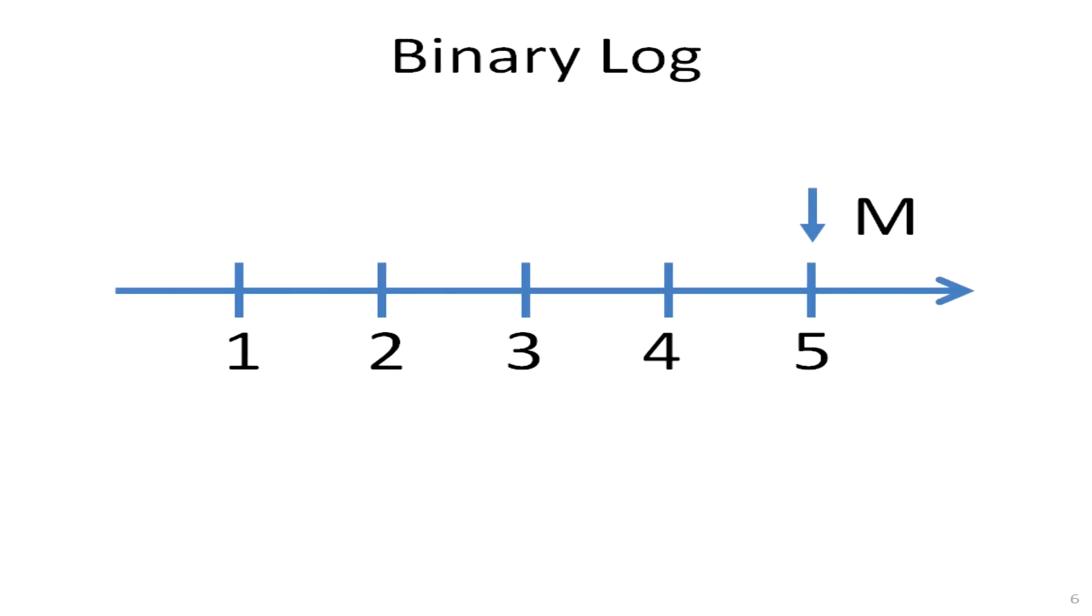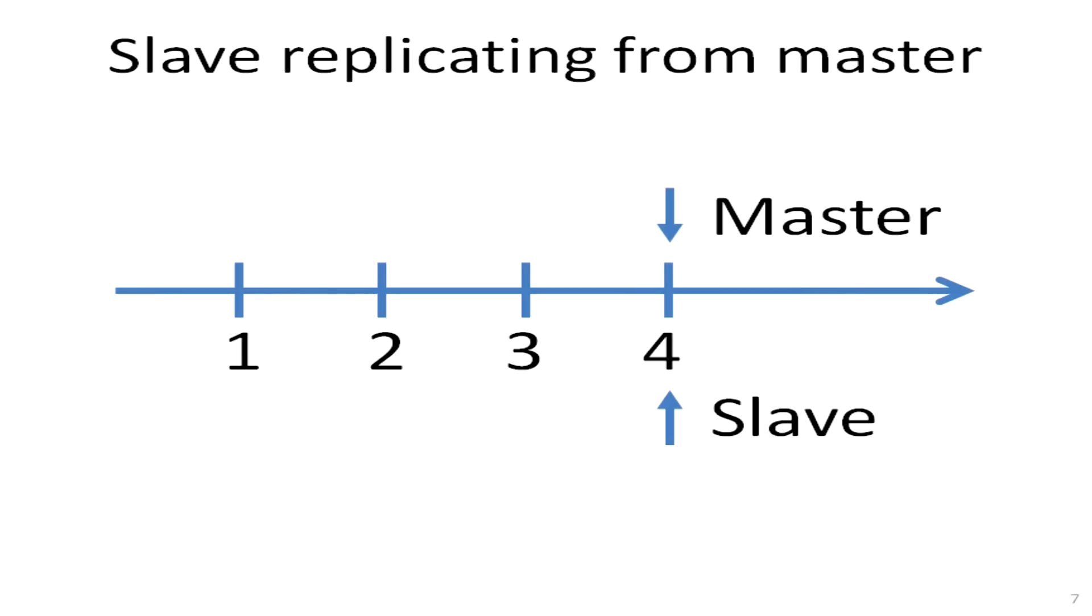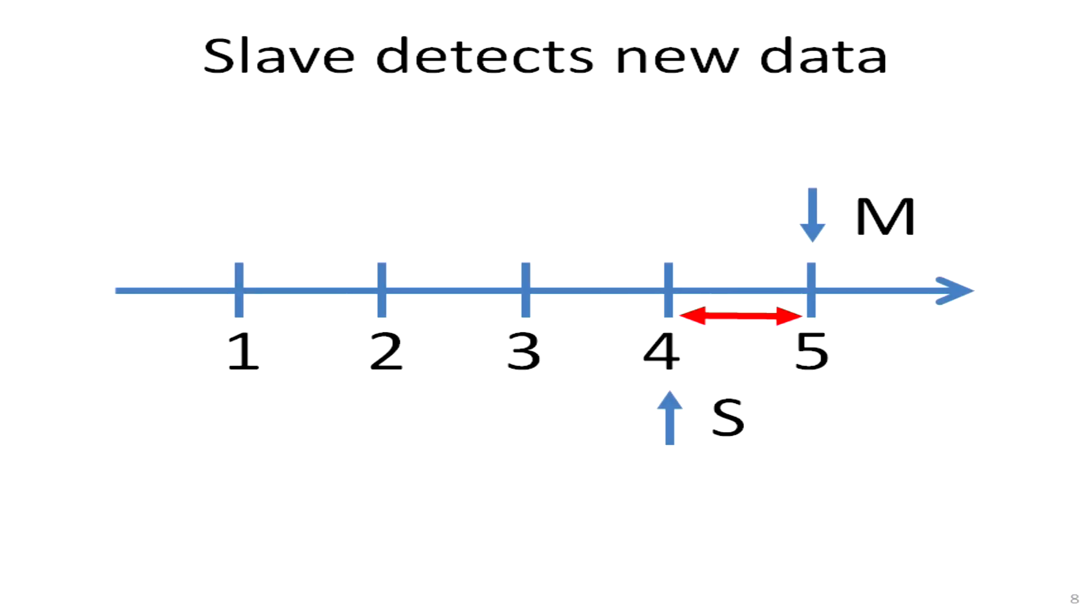When the new change comes, master assigns next available integer number and stores the change into the place called binary log from where the slaves can read those changes. What slaves do is they periodically check for the master position, and when the position differs, they download every change starting with the old master position and apply these changes to itself.